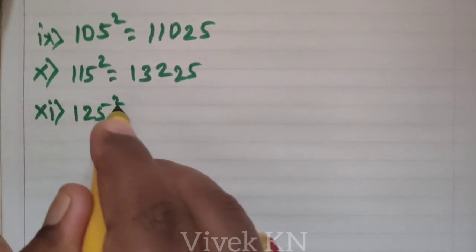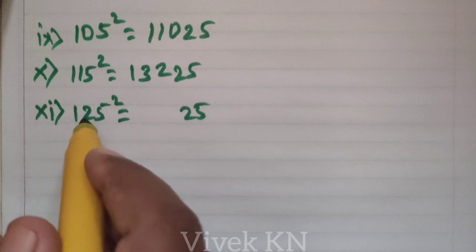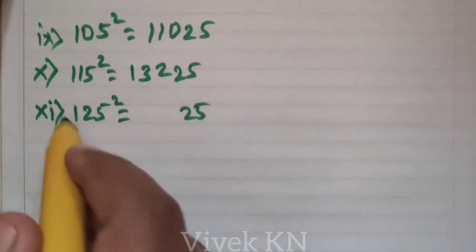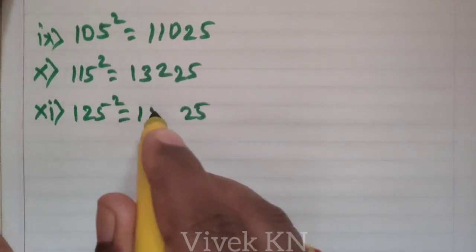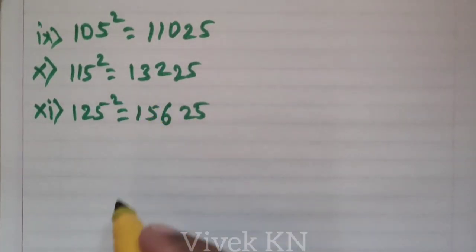Next, 125 square. 5 square is 25. The number that comes after 12 is 13. 13 into 12 is equal to 156. And it will continue.